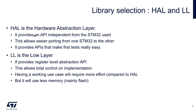First, library selection between HAL and LL. What are these HAL and LL? HAL is the hardware abstraction layer. It provides an API independent from the STM32 used. The main point about HAL is that it allows easier porting from one STM32 to the other. HAL also provides an API that makes first tests really easy, so it's really an easy library that allows you to start prototyping.